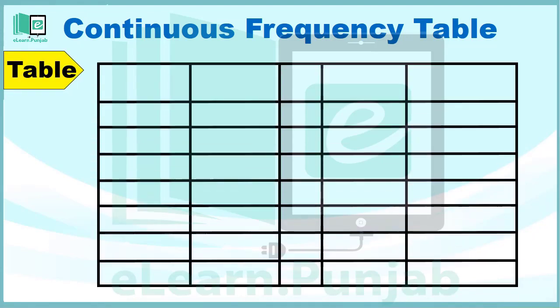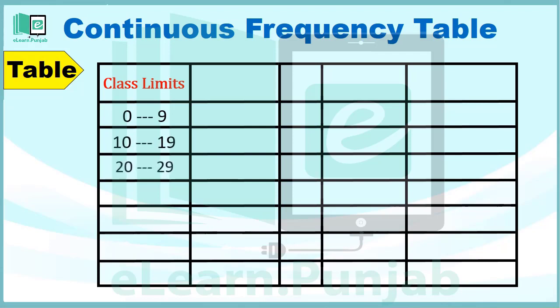Solution को एक Table की मदद से समझते हैं। Table के First Column में हम Class Limits लेंगे। याद रहे कि इस Example में हम Data Example 2 का Use कर रहे हैं۔ इसलिए इस Data के مطابق ہم Class Limits بناتے ہیں۔ ہر Class Limit کا Interval 10 ہوگا، اس لیے Class Limit کے Column کی Values 0 to 9، 10 to 19، 20 to 29، 30 to 39، 40 to 49، 50 to 59 اور 60 to 69 ہوگی۔